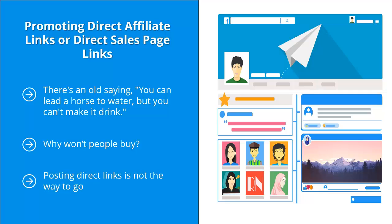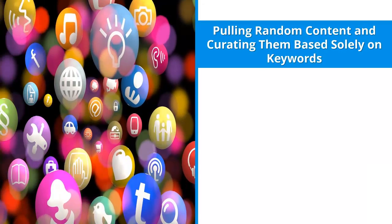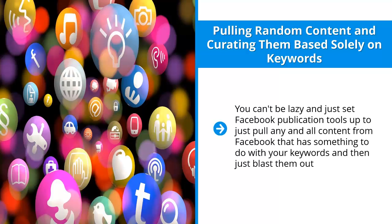You have to build confidence and trust first. Mistake five: pulling random content and curating based solely on keywords. You can't be lazy and just set up Facebook publication tools to pull any and all content that has something to do with your keywords and then just blast them out. You're just spamming when you do that. You have to be very deliberate and careful regarding the kind of content, whether curated or not, that you associate with your brand.